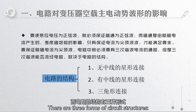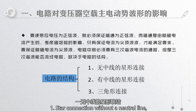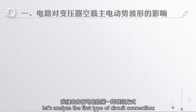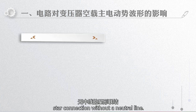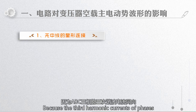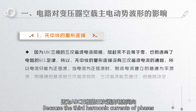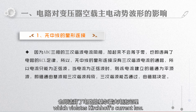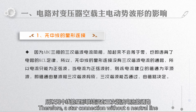There are three forms of circuit structures: 1. Star connection without a neutral line. 2. Star connection with a neutral line. 3. Delta connection. Let's analyze the first type: star connection without a neutral line. Because the third harmonic currents of phases A, B, and C are in the same direction, they do not sum to zero, which violates Kirchhoff's current law. Therefore, a star connection without a neutral line has no path for the third harmonic current.